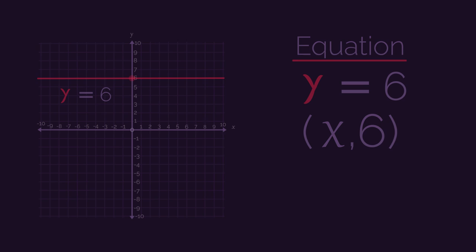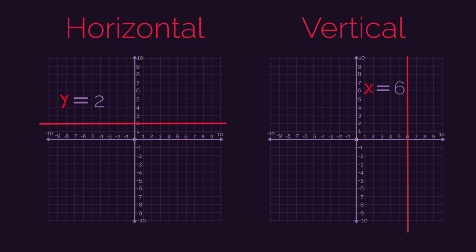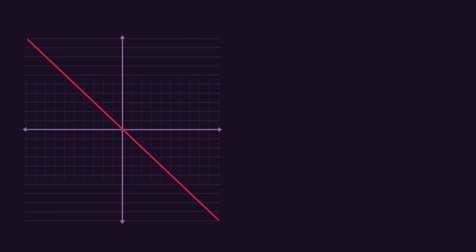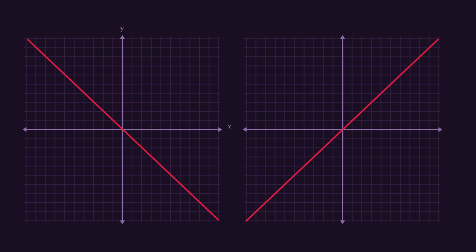So that is horizontal and vertical lines. But there are two important diagonal lines. This one, and this one.